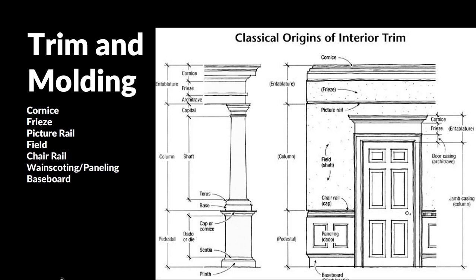On the left we have a basic breakdown of the classical column, seeing that we have the cornice, the frieze, the shaft of the column, the base, and all of those parts and pieces. That's compared to the image of an interior wall on the right, and you can see how directly the proportions and the way we divide up interior walls traditionally is really directly taken from the proportions of that column. Some of the terminology changes and it's not exact, but it's very, very similar.